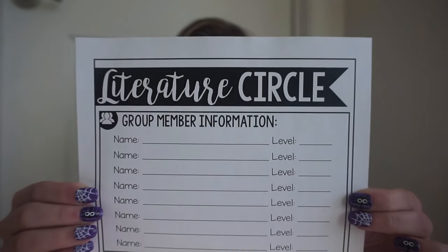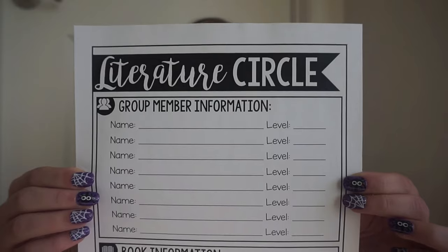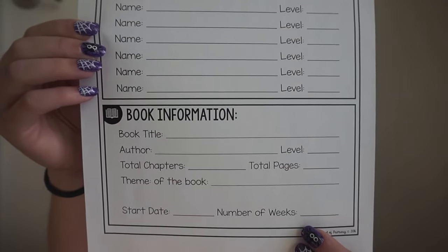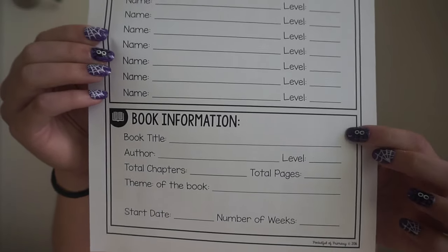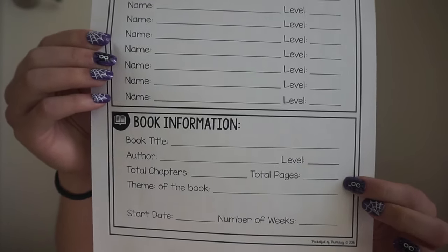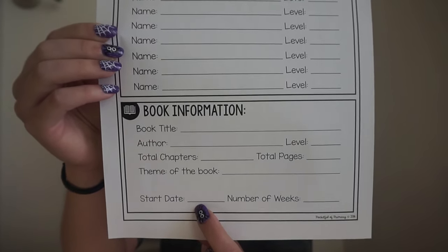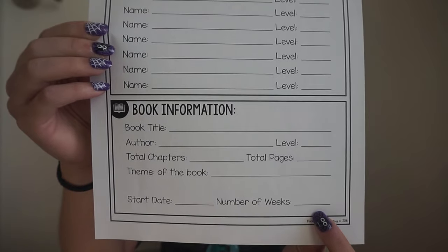The group information page is just a snapshot of all the key information. At the top I have all of my group member names and their level. At the bottom there's information on the book: the title, author, level, total chapters, total pages, the theme I really want to discuss with my students, the date the literature circle is going to start, and the total number of weeks. I recommend no less than five students and no more than eight students in a group. Currently my literature circle has seven members, so the bottom name spot is just blank.